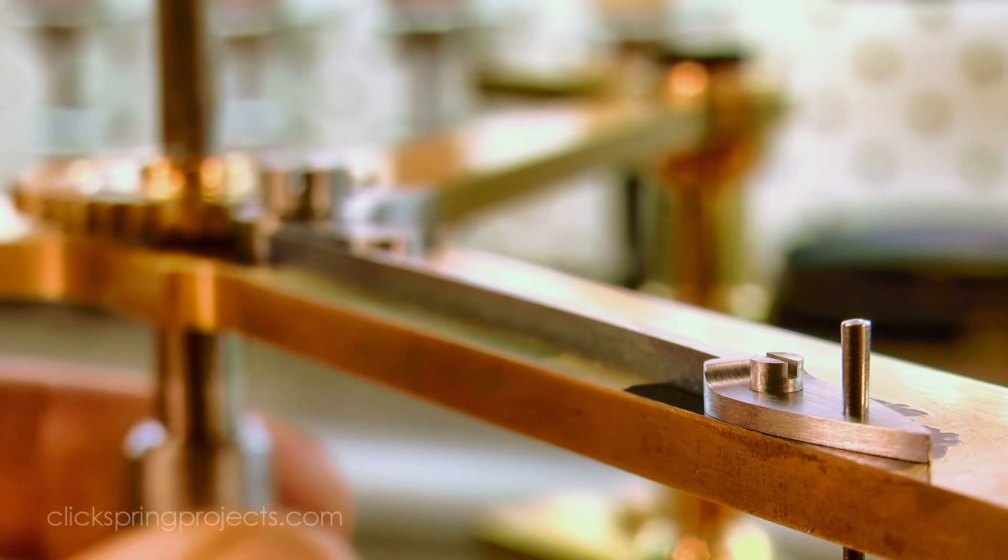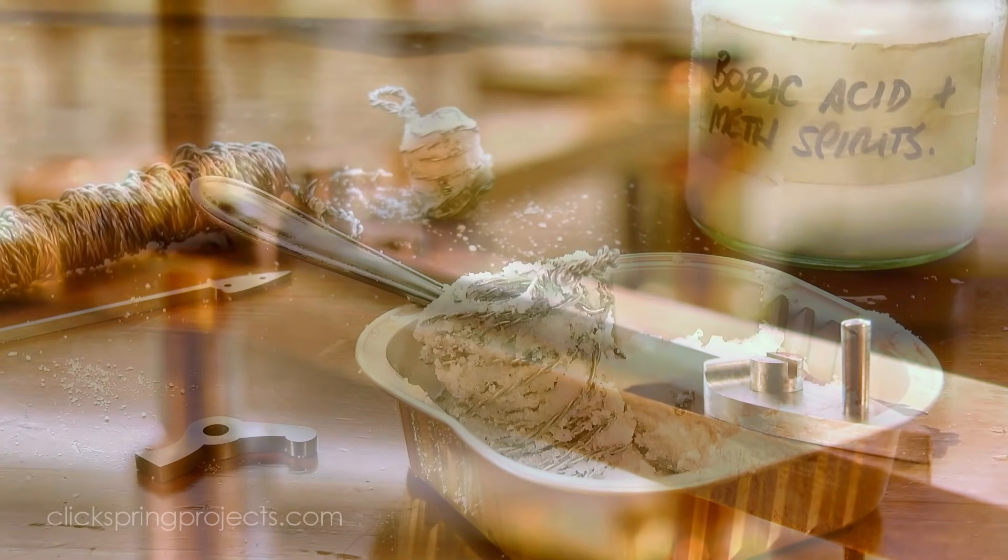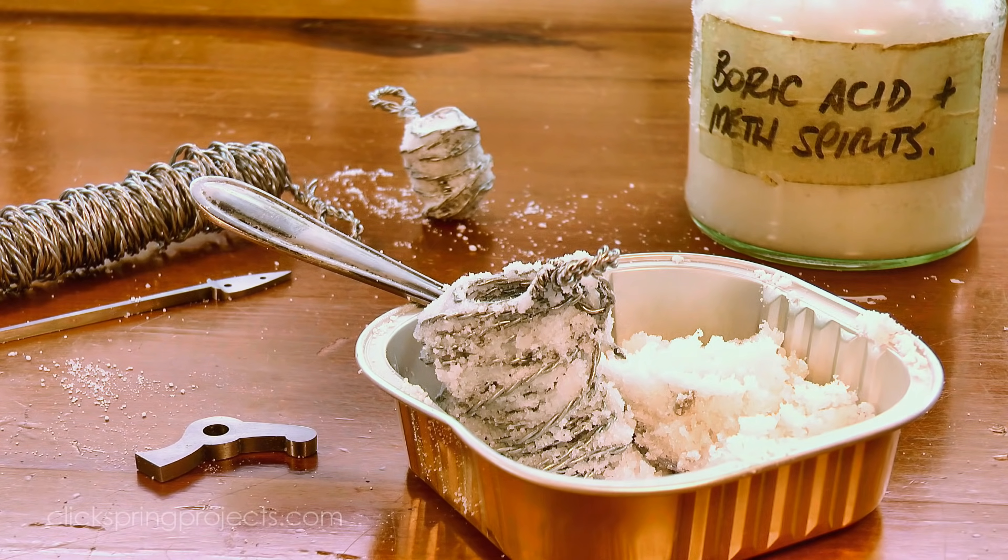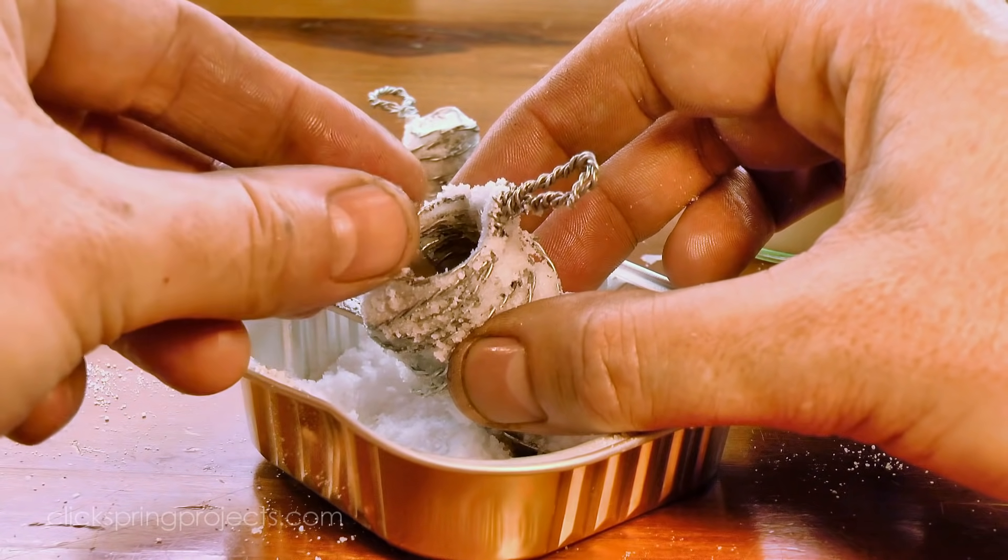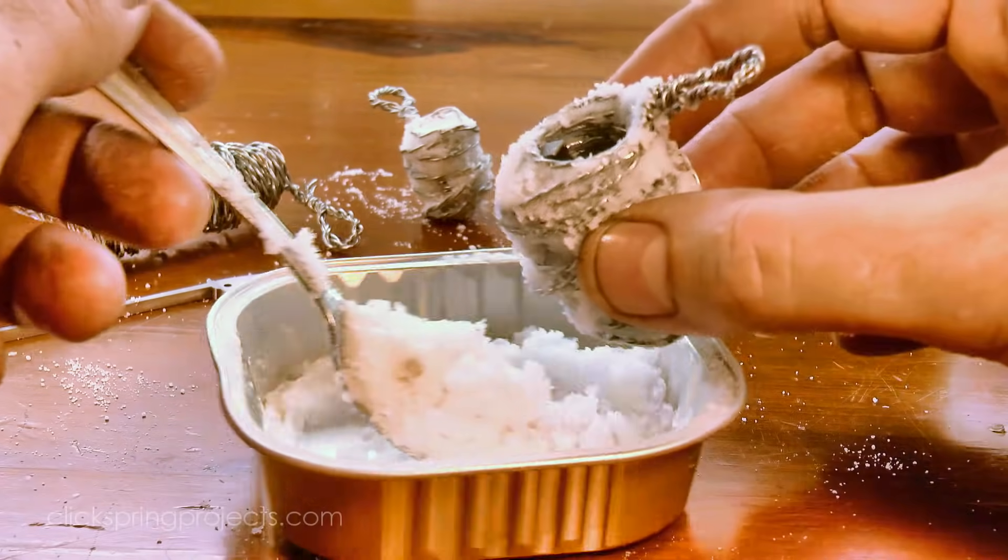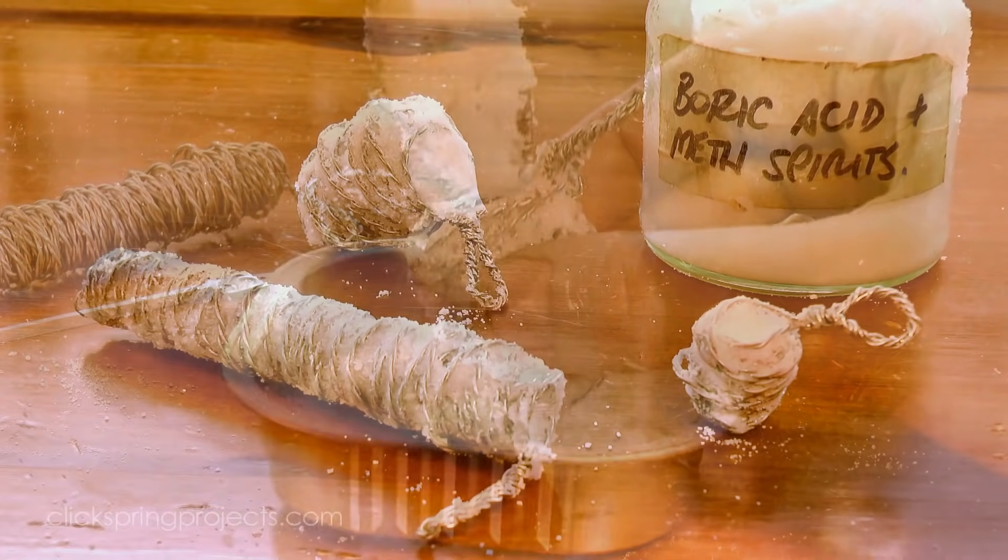The ratchet has a firm clean action, and everything is fitting together well, without binding or interference. So the parts can now be hardened after being given a powdered boric acid coating to help reduce the oxidation scale.